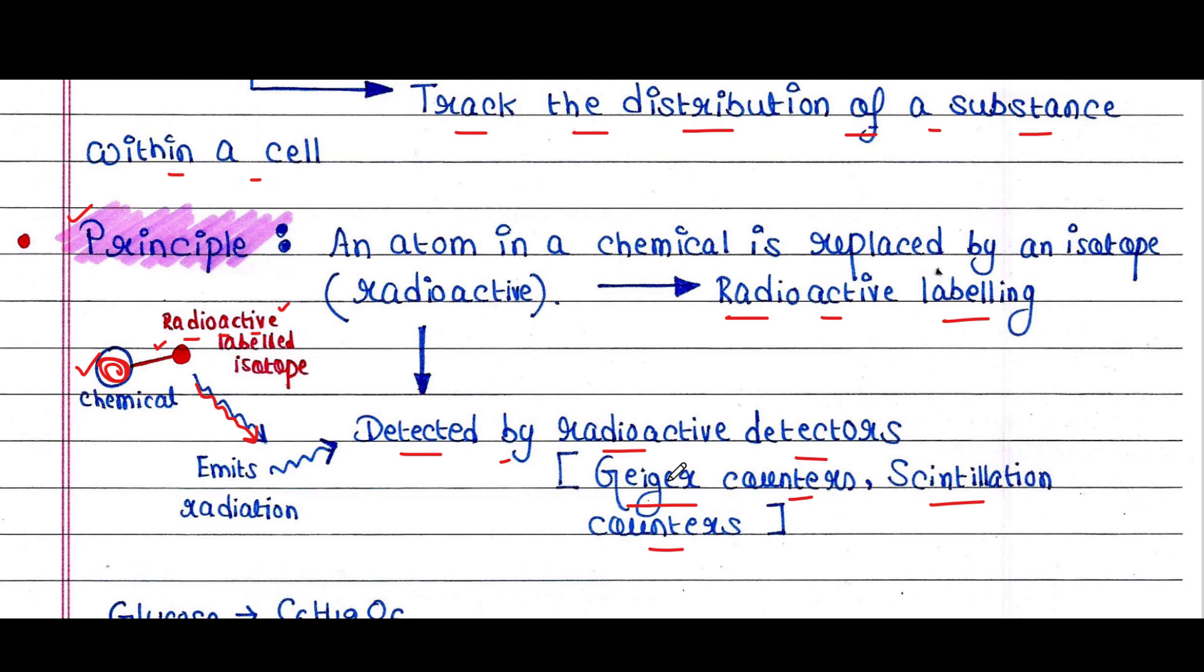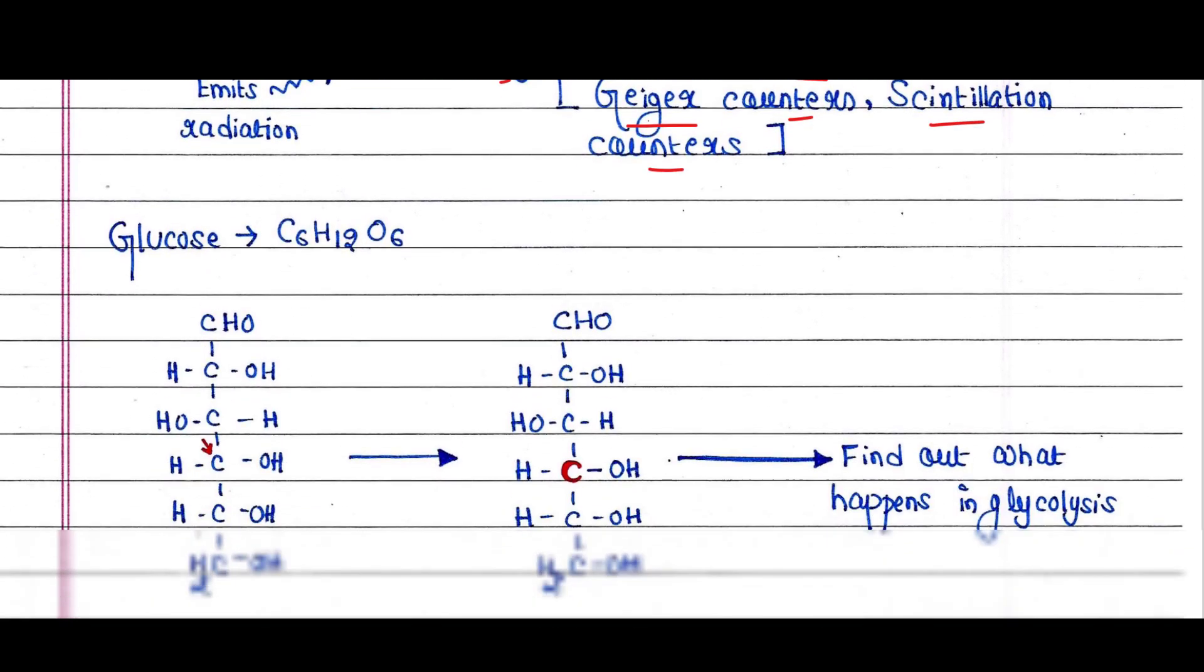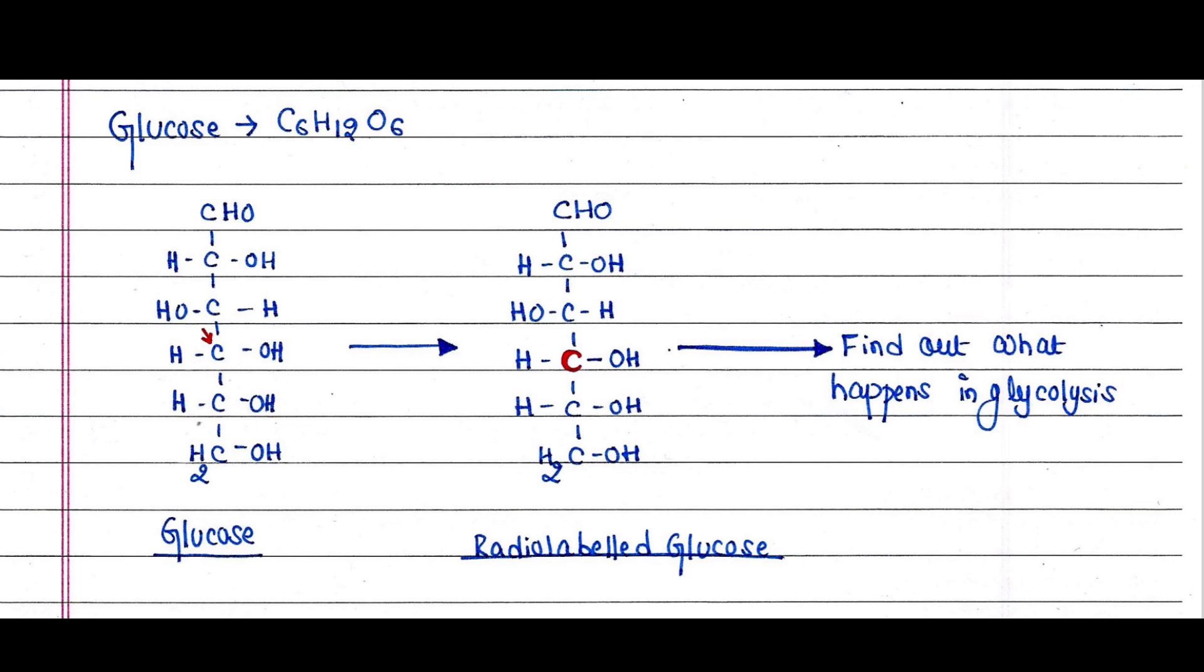Now let's talk about its two applications which I have already mentioned. Suppose we have glucose. So this is the formula of glucose, and we know that it has six carbon atoms.